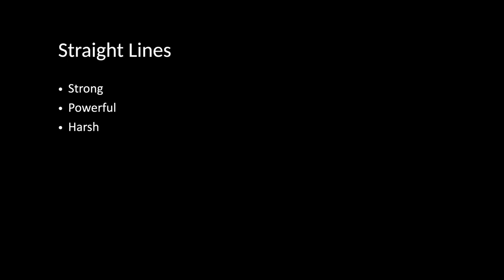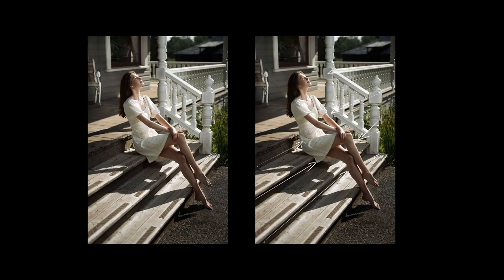Let's see some examples, starting with straight lines. What do we usually feel when we see straight lines? Straight lines typically represent something strong, powerful, or sometimes harsh. Here's an example with a lot of straight lines in the image. Even the model's pose is kind of tense, and there's harsh light. This combination gives you a harsh and strong feeling about the image.